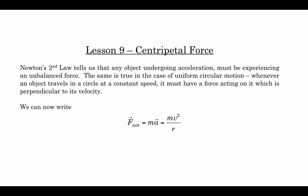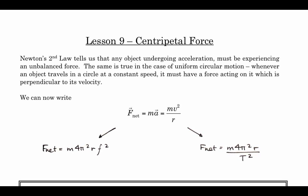So instead of writing F net equals ma, we can replace the a with the centripetal acceleration when it's moving in a circle. So F net is equal to mv squared over r. We could also write F net equals m 4π² r f² or m 4π² r over T². These are the different forms of uniform circular motion depending on what we have and what we're given in a problem.